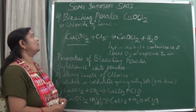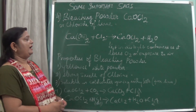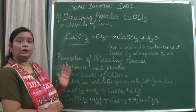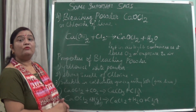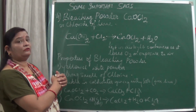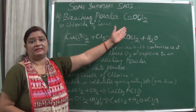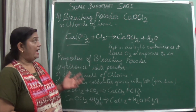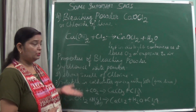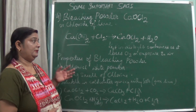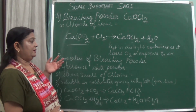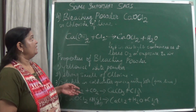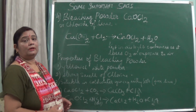Uses of bleaching powder: it is used as a disinfectant. It is used as a bleaching agent — the cause of its bleaching action is the chlorine present in it. It can bleach colors or dyes and is used in the pulp industry. It is also used for bleaching clothes.